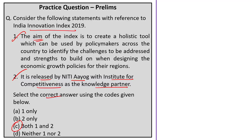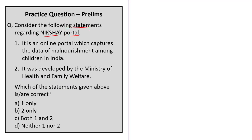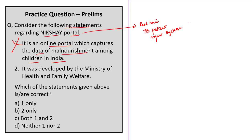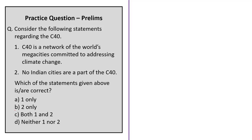Question 3: Consider the following statements regarding the Nikshay portal. Statement 1 states it is an online portal capturing data on malnourishment among children in India — this is wrong. Nikshay is a case-based real-time patient management system for tuberculosis patients. Statement 2 states it was developed by the Ministry of Health and Family Welfare — this is a broad/gentle statement and is correct; it was developed jointly by the Central Tuberculosis Division of the Ministry of Health and Family Welfare along with the National Informatics Centre. Correct answer: Option B, statement 2 only.